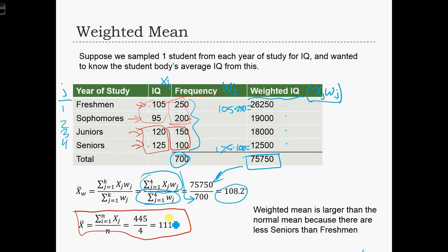So the average has actually gone down when we consider the fact that there's far more freshmen and sophomores with lower IQs in our sample than there are juniors and seniors.